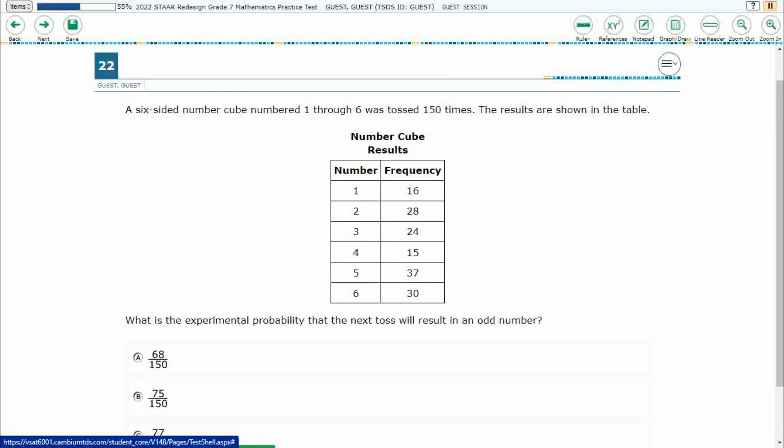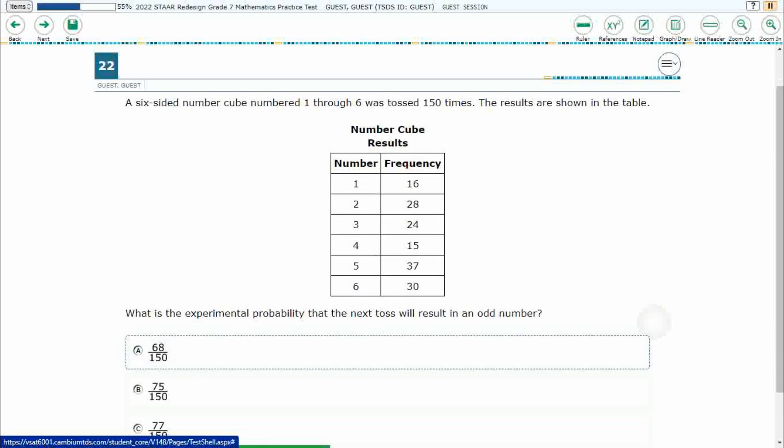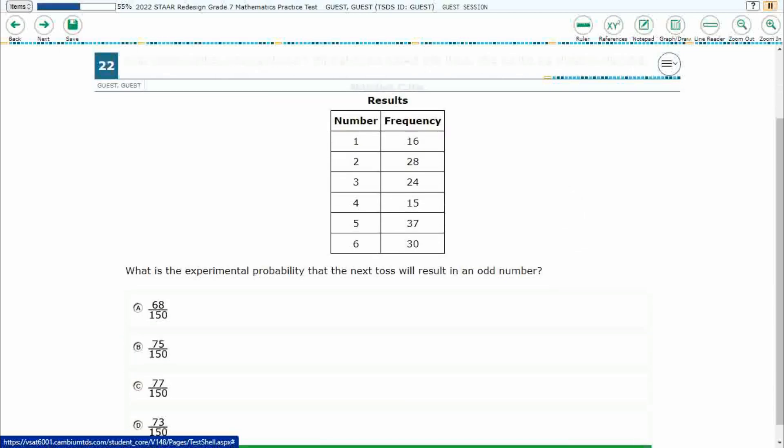So we have a six-sided number cube, a die, numbered 1 through 6, tossed 150 times, and the results are shown right here. So how frequent the numbers 1 through 6 were tossed. Looks like we've got, it's kind of strange, look at that, 6 was tossed twice as much as 4.